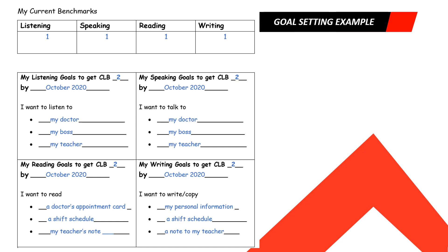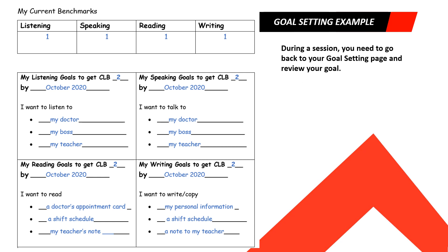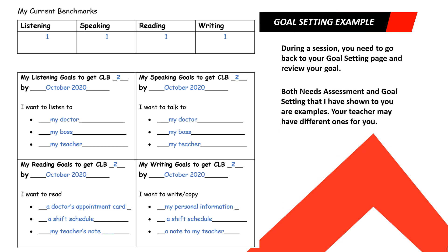Here is an example of my student's goal setting. The student first filled out his current benchmarks — he had CLB 1 for listening, speaking, reading, and writing. Then he completed the four boxes for each skill with a deadline. He wanted to get CLB 2 for listening, speaking, reading, and writing by October 2020. He also listed what he wanted to achieve for the four skills in class. During a session, you need to go back to your goal setting page and review your goal. Note that both the needs assessment and goal setting I've shown are examples — your teacher may have different ones for you.